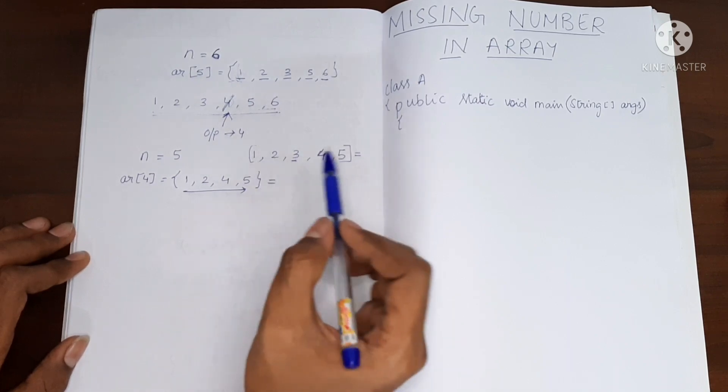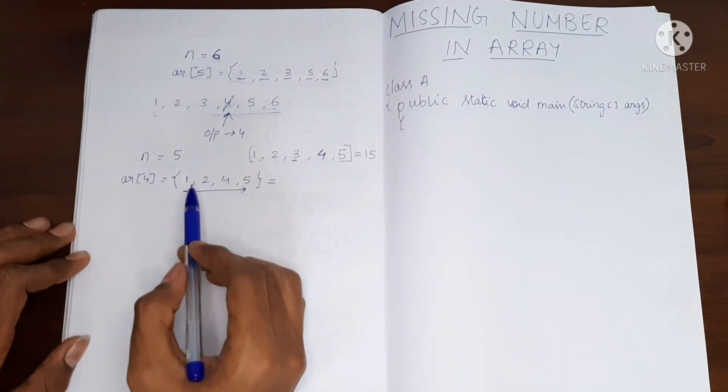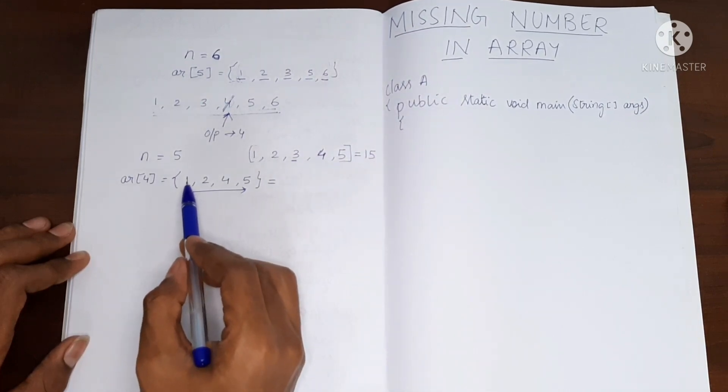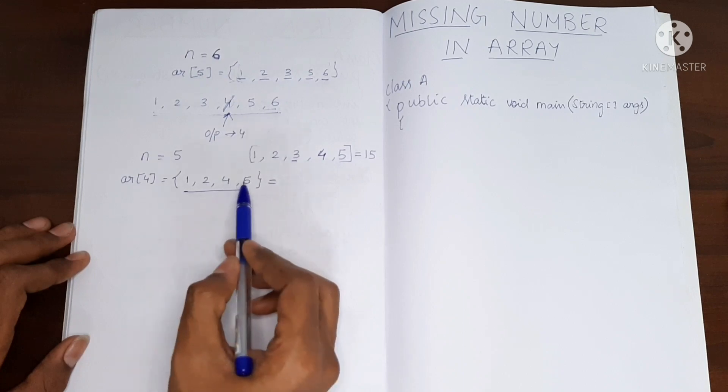It will be 5 plus 4, 9, 12, 13, 14, 15. So the value is 15. What if we add all these? It will be 1, 3, 7 and 12.